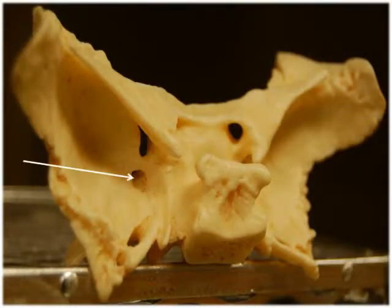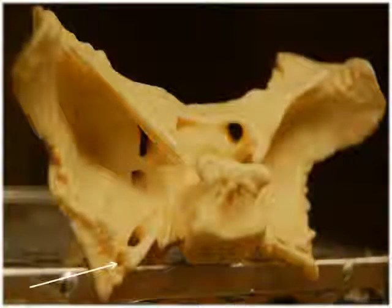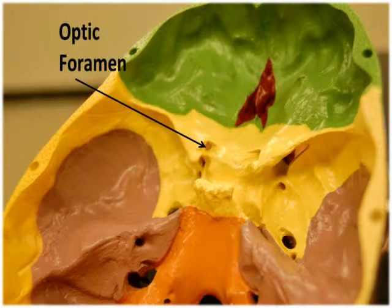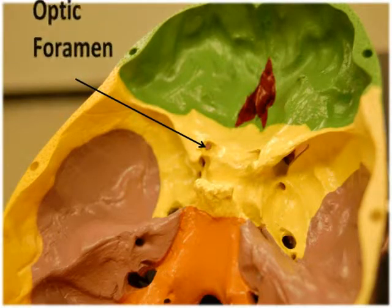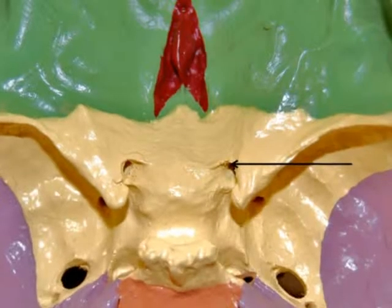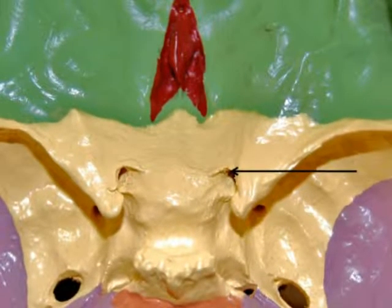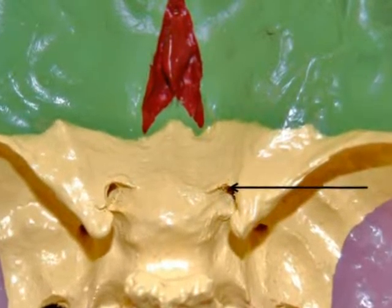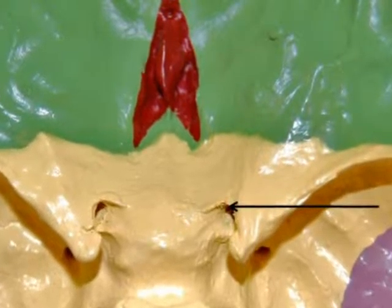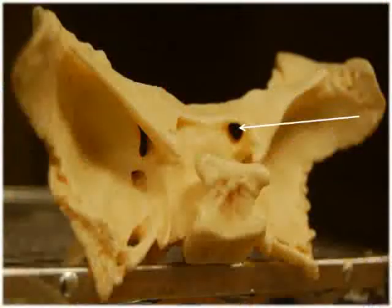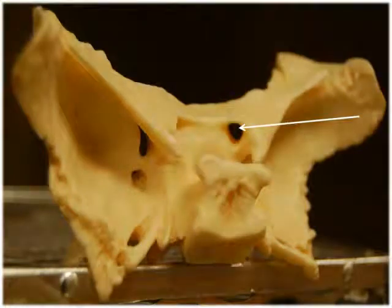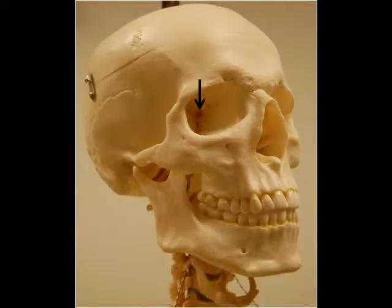The sphenoid bone is home to many foramina. The optic foramen, also known as the optic canal, is located anteriorly on the sphenoid bone between the body and lesser wings, just in front of the sella turcica. It allows the optic nerve, which is cranial nerve 2, and the ophthalmic artery to pass into the orbit.